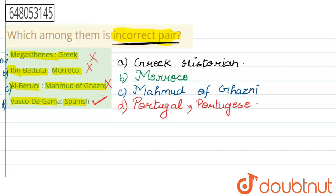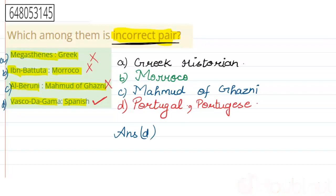The rest of the options are correct pairings. Your correct answer here is option number D. Thank you.